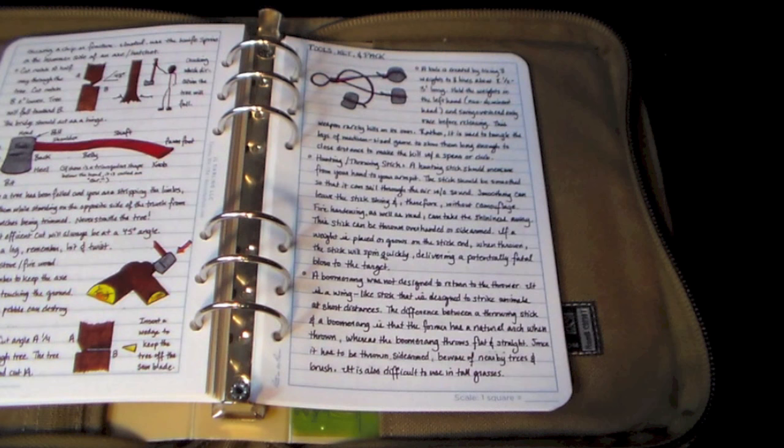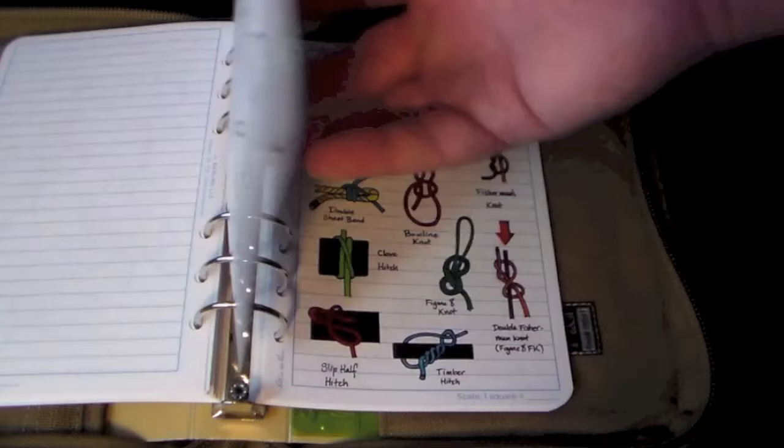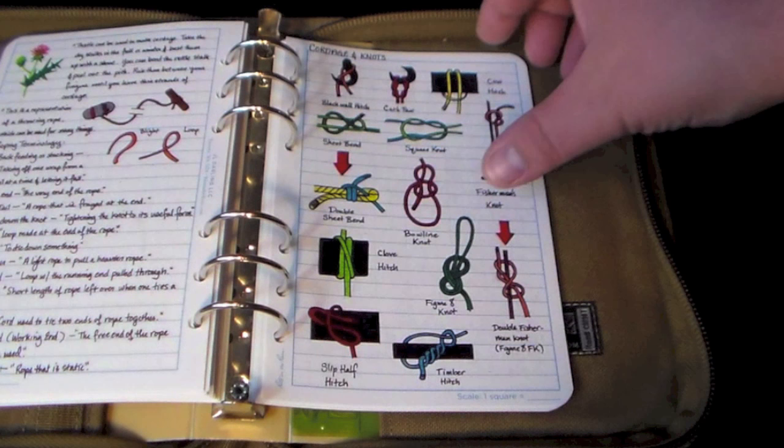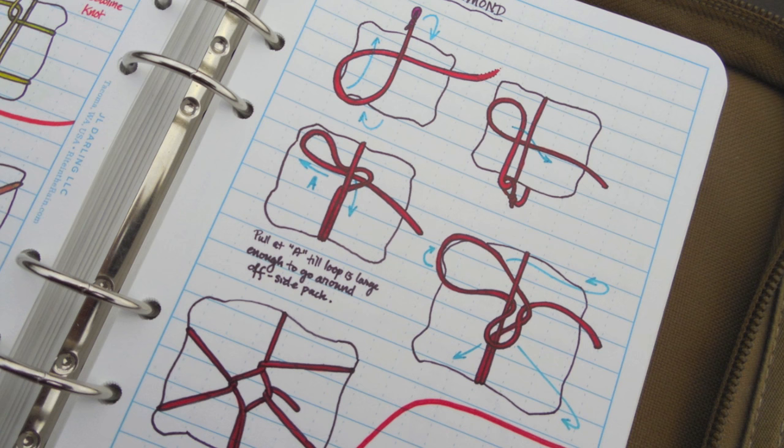After my section on kit I have a section on cordage and knots. And this is where I draw out all the major knots that I would use. So if I can't remember how to tie something, I can just look it up really quickly and remember exactly how to tie a knot, how to make cordage, interesting things to do with cordage, things of that nature.